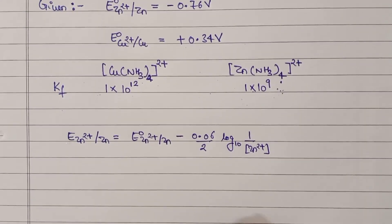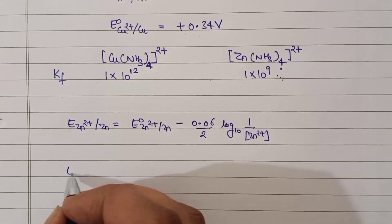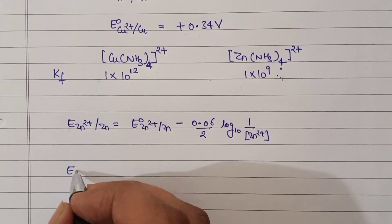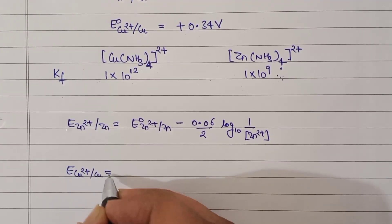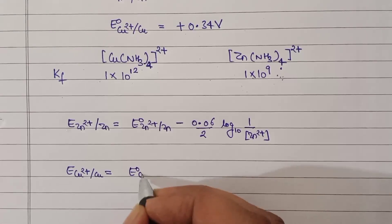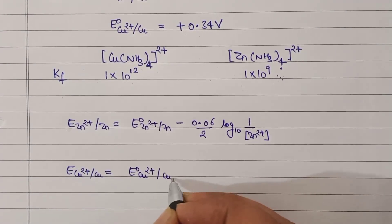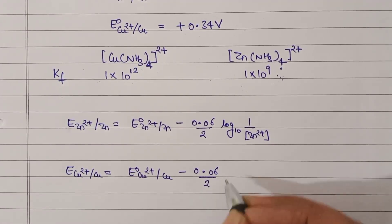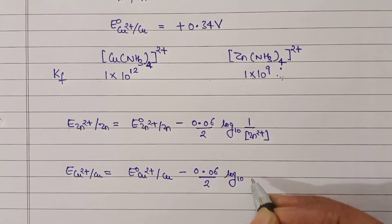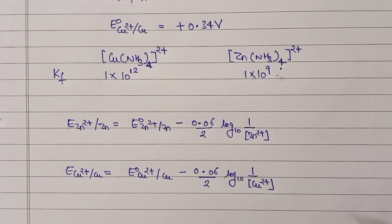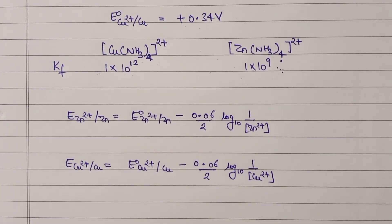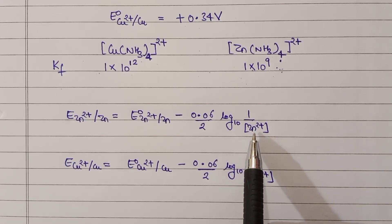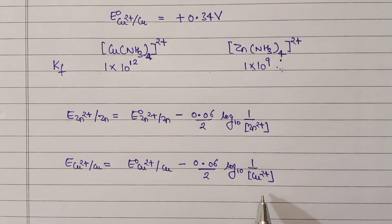From this equation we can calculate the reduction potential of Zinc. Similarly, for Copper, applying the Nernst equation for the copper half cell: reduction potential equals standard reduction potential minus 0.06/2 — since N = 2 for the copper half cell as well — times log base 10 of 1 divided by the concentration of Cu²⁺.